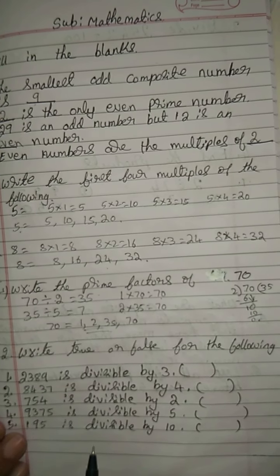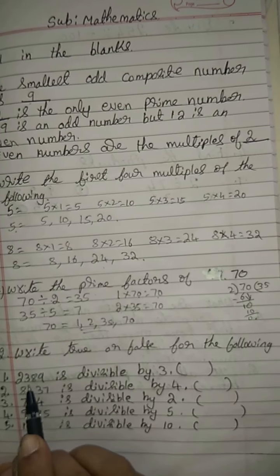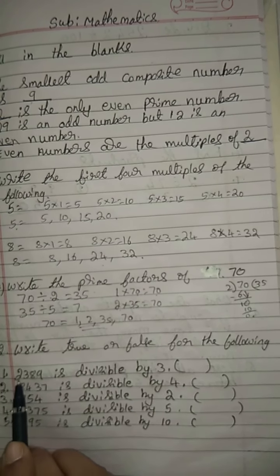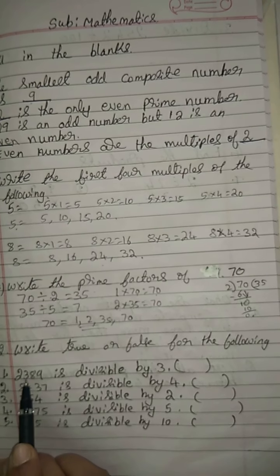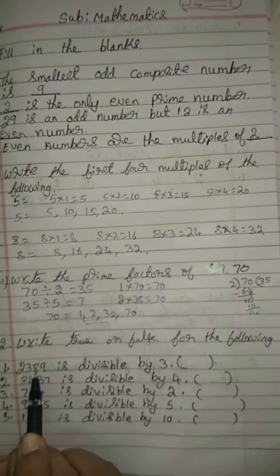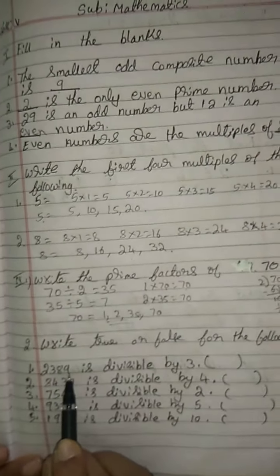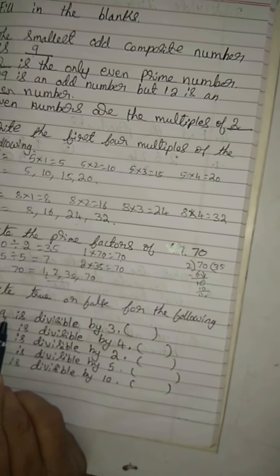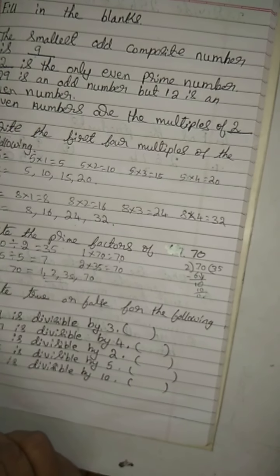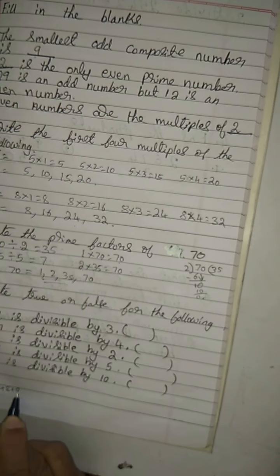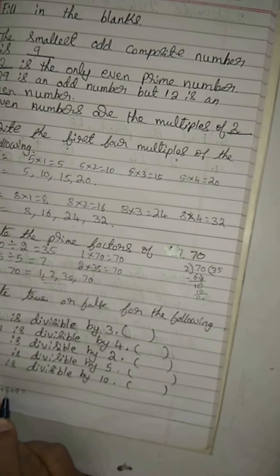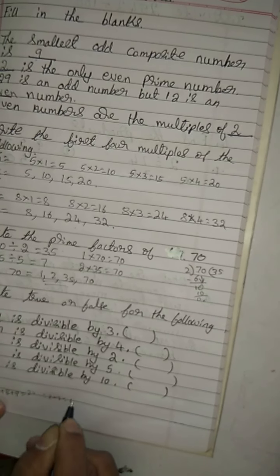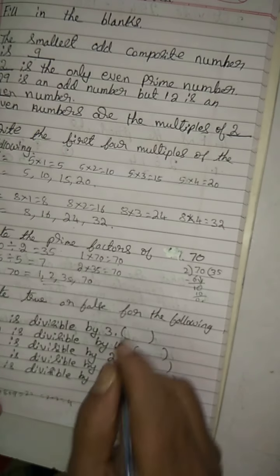Write true or false for the following. 2,389 is divisible by 3. Now you must add all these digits: 2 plus 3 is 5; 5 plus 8 is 13; 13 plus 9 is 22. Again, 2 plus 2 is equal to 4. So it is not divisible by 3. So it is false.